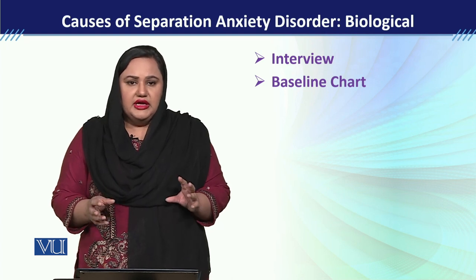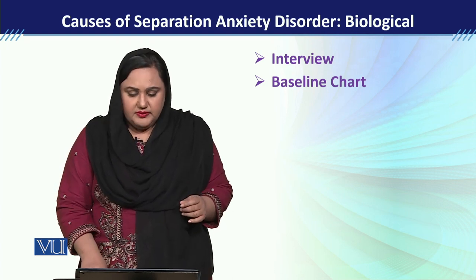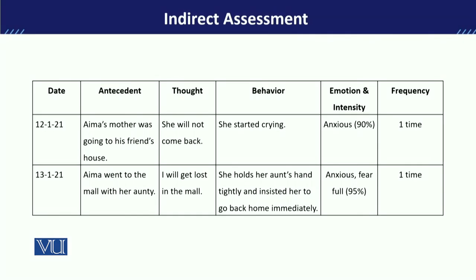Then we move towards the baseline chart. The baseline chart can be given in different settings — it can be given at home or at school. In the baseline chart, we first need to look at the antecedent event, thought pattern, behavior, emotion, intensity, and frequency of behavior.